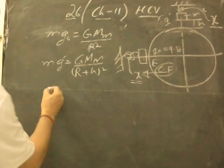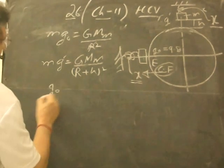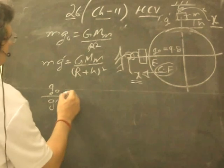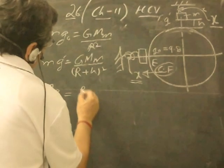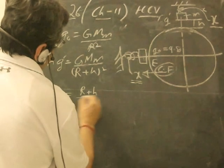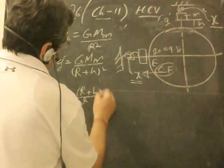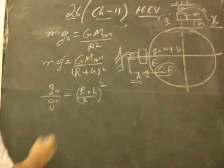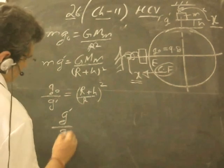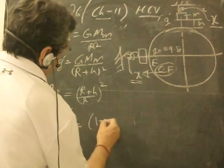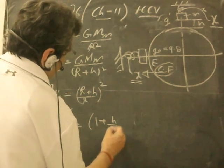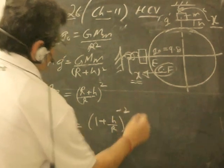Divide these two relationships. We get g₀/g' is equal to (R + H)²/R². So g'/g₀ is equal to (1 + h/R)^(-2).